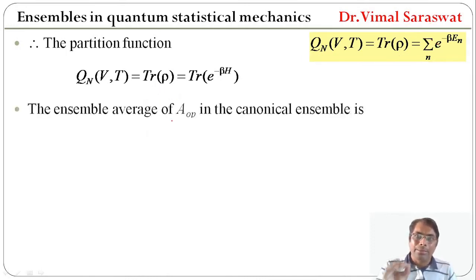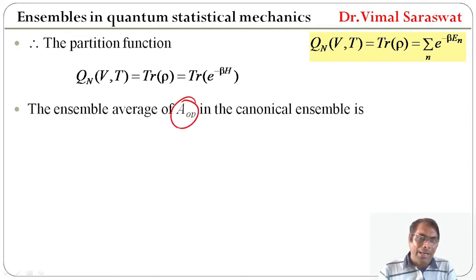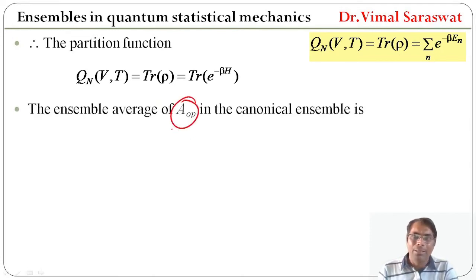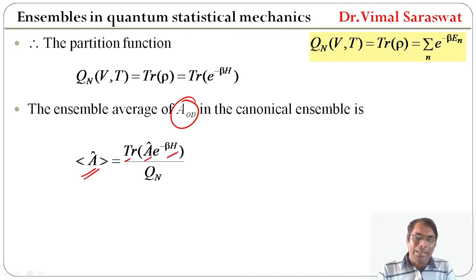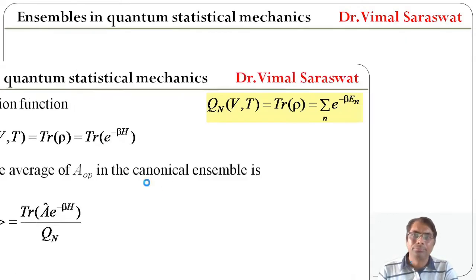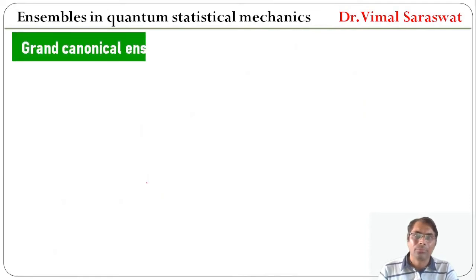The ensemble average of operator A in the canonical ensemble is given by the ensemble average of A equal to trace of (operator A times e^(minus beta H)) divided by Q_N.